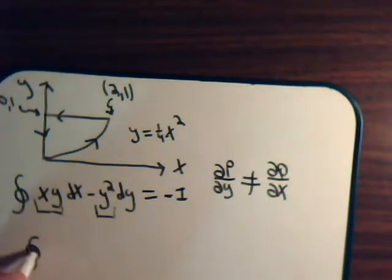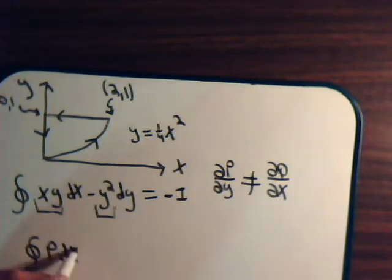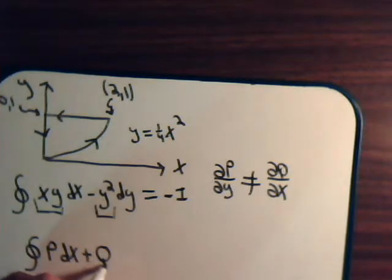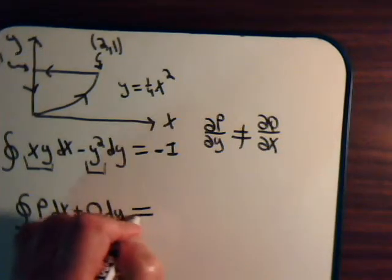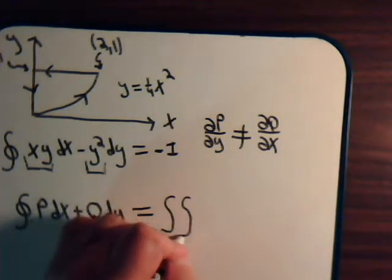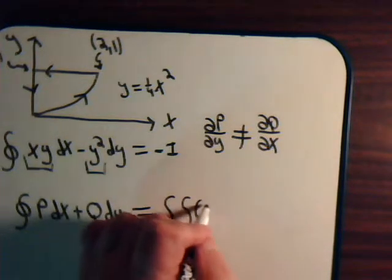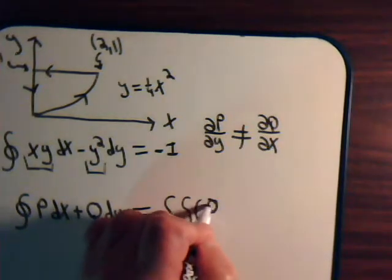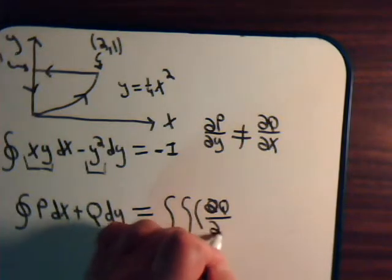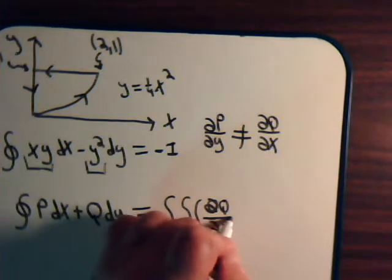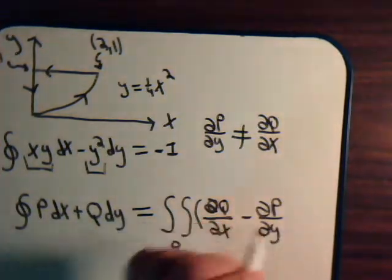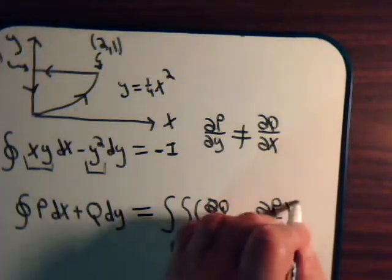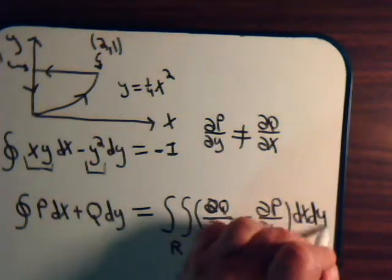Remember, it was like this. A closed line integral equals the double integral of partial of Q with respect to X minus the partial of P with respect to Y dx dy. That's Green's theorem on the plane.